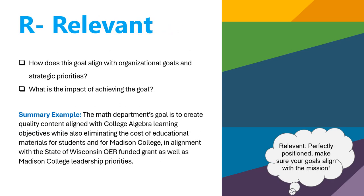Relevance — perfectly positioned, make sure your goals align with the mission. Relevancy centers on alignment and the broader impact of the goal. How does this goal align with organizational goals and strategic priorities, and what is the impact of achieving the goal? For example, the math department's goal is to create quality content aligned with college algebra learning objectives while eliminating the cost of educational materials for students and for Madison College, in alignment with the state of Wisconsin OER funded grants as well as Madison College leadership priorities.